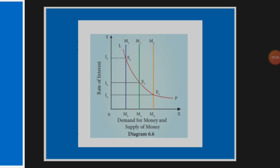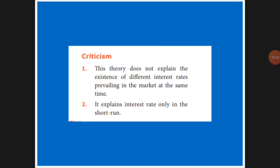As criticism of this theory: it does not explain the differences in interest rates — what is the actual rate in the market was not explained. The present situation was not explained. Also, this theory explains only the short run and does not explain the long run. So these are all about the Liquidity Preference Theory of Interest by Keynes. Thank you.